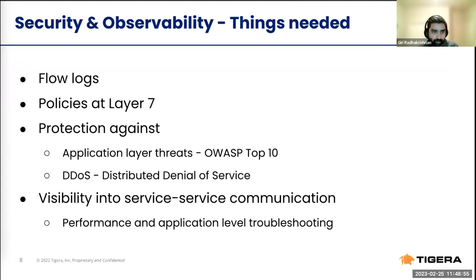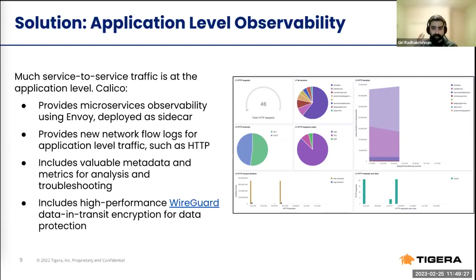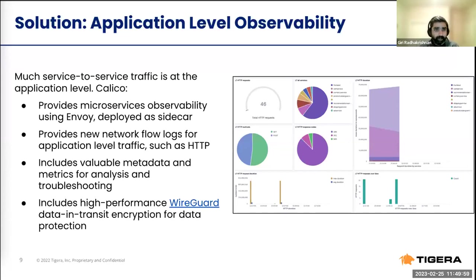Moving on to solutions — how do you solve for these challenges? Service-to-service traffic is at the application level. Calico is the open source solution I'm here to talk about — it came from Tigera, and started as a software-defined networking solution around 2016 when Kubernetes adoption was increasing. It originated from metaswitch as a more elegant SDN solution and evolved from there. Calico also designed a CNI — container networking interface — which is a way to provide networking for containers.